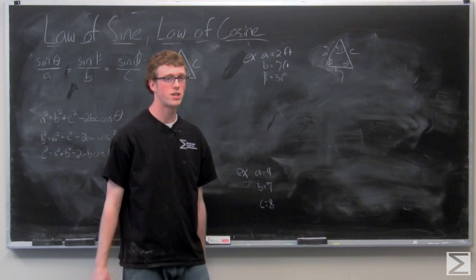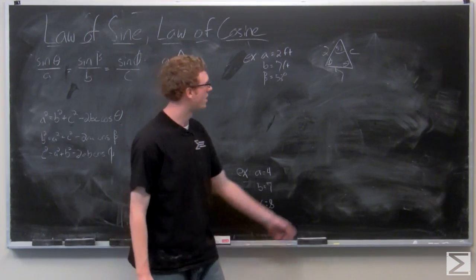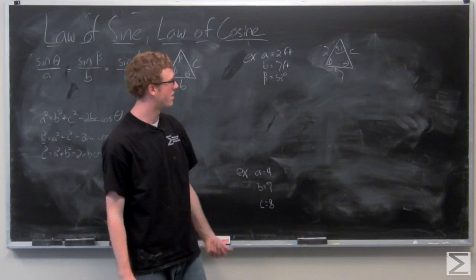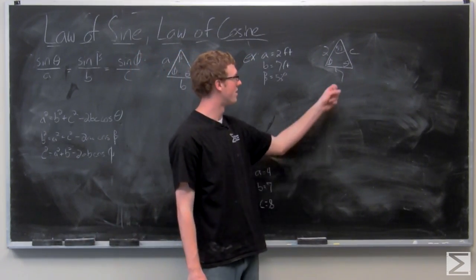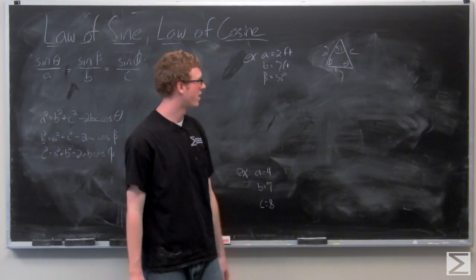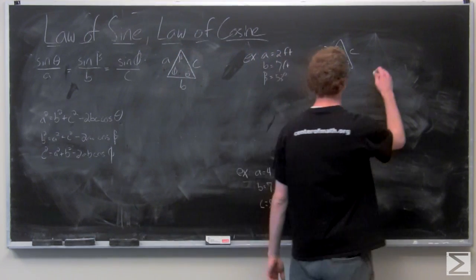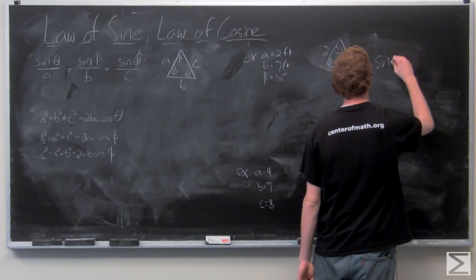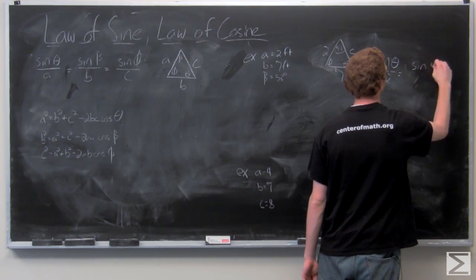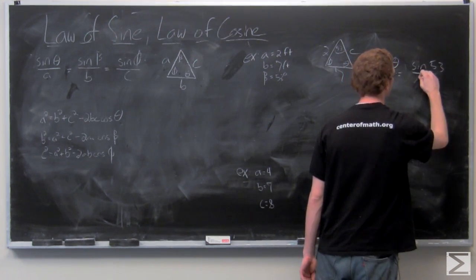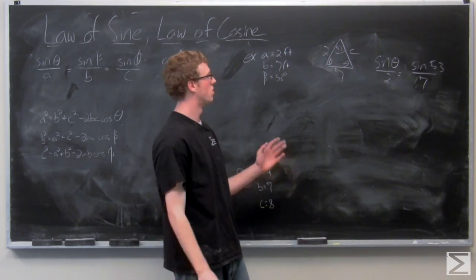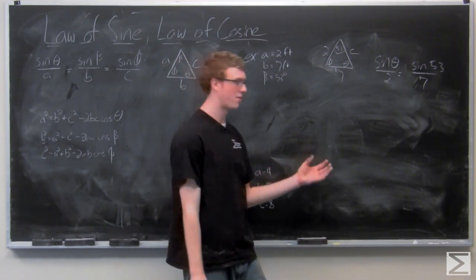What we're going to do first is find theta using the law of sines. We know that this angle is acute, and we know that theta is going to be acute because it is opposite a shorter side of the triangle that is already opposite an acute angle. So we have sine of theta over 2 equals sine of 53 over 7. Then multiply both sides by 2, take inverse sine.